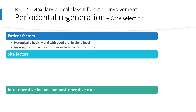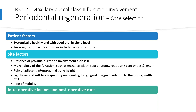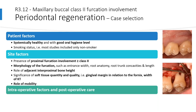At the patient level, subjects should be systemically healthy with good oral hygiene. Smoking status must be considered, and the patient is preferably a non-smoker. Site factors of concern include: presence of proximal furcation involvement greater than or equal to class 2; morphology of the furcation such as entrance width, root anatomy, root trunk concavities, and length; role of adjacent interproximal bone height; significance of soft tissue quantity and quality, such as the gingival margin in relation to the fornix and width of keratinized tissue; and the role of mobility.